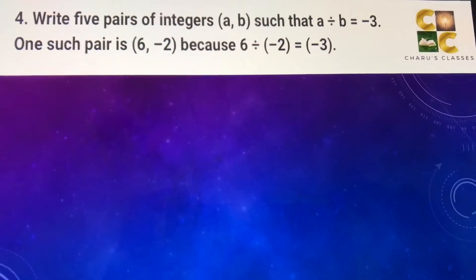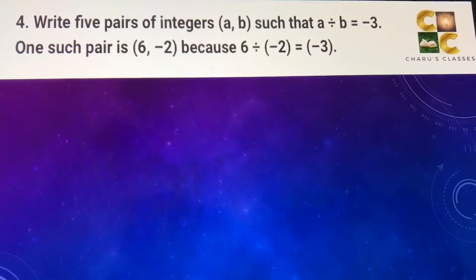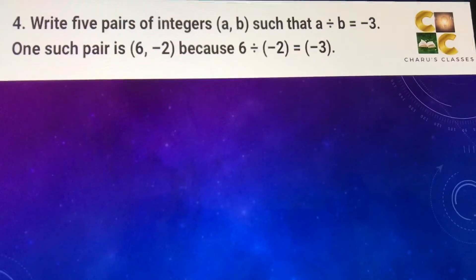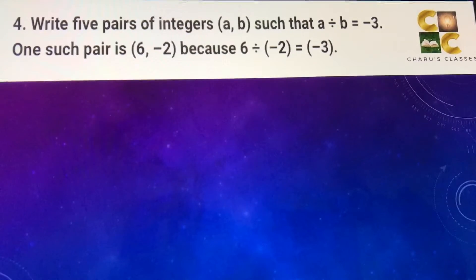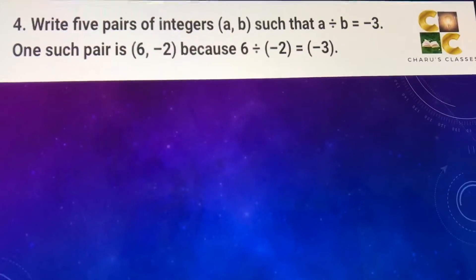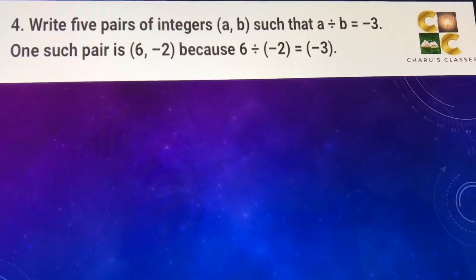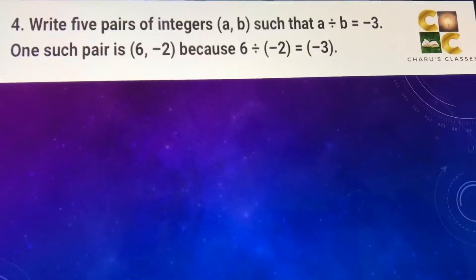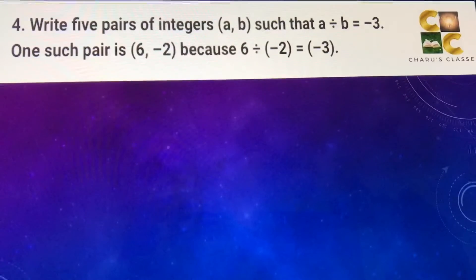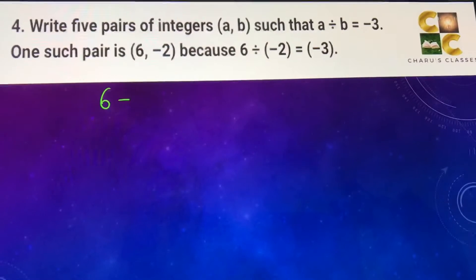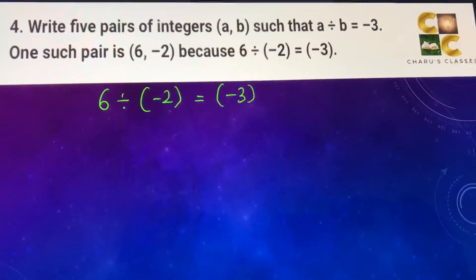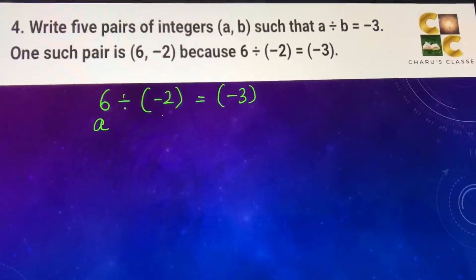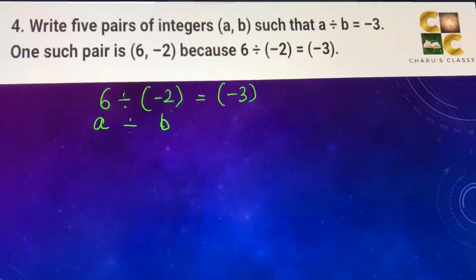Hello students! Let's do question number 4 of exercise 1.4. Write 5 pairs of integers such that a divided by b is equal to minus 3. One such pair is 6, minus 2 because 6 divided by minus 2 equals minus 3. So they have given an example. We are looking for values of a and b such that a divided by b comes out as minus 3.